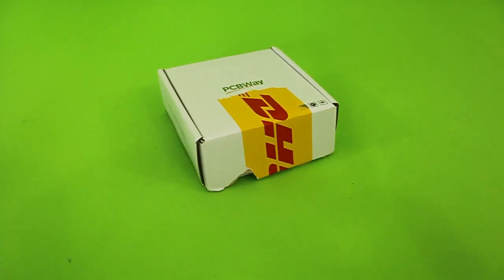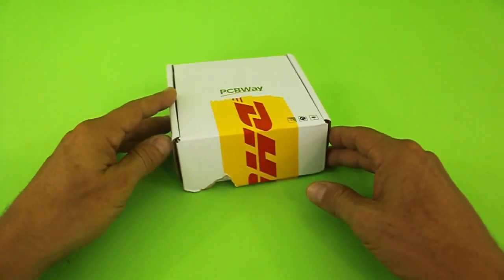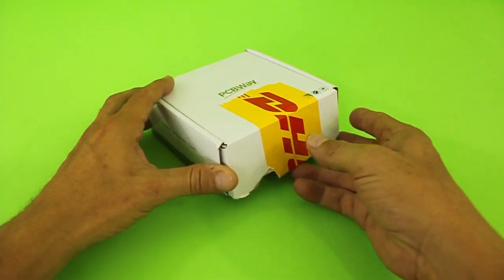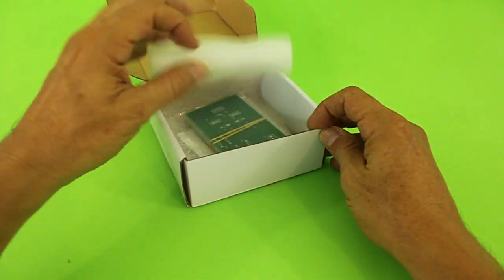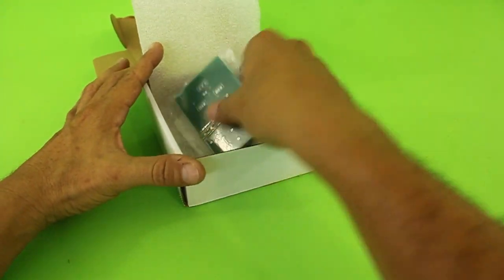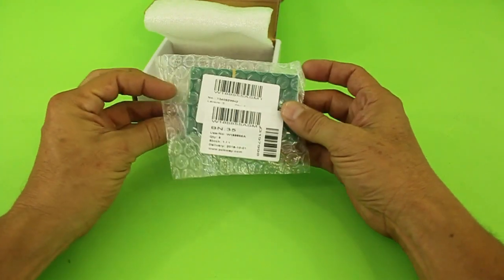After a few days you get your package in the mail. I chose DHL for shipping which is the fastest method and it took less than one week to arrive. And here we have the PCBs.